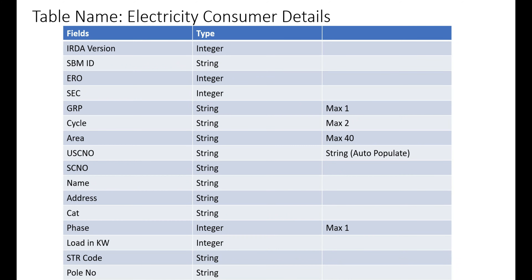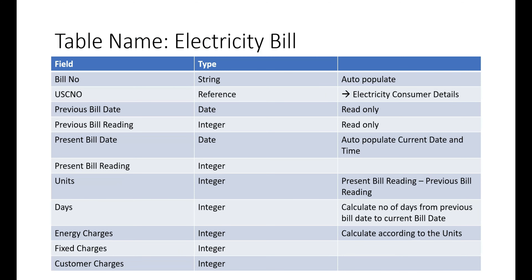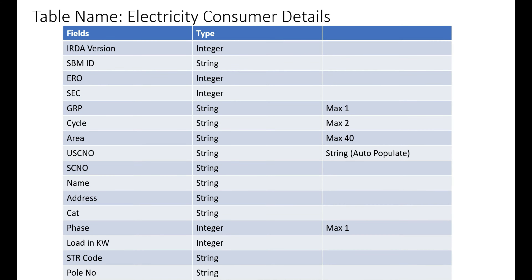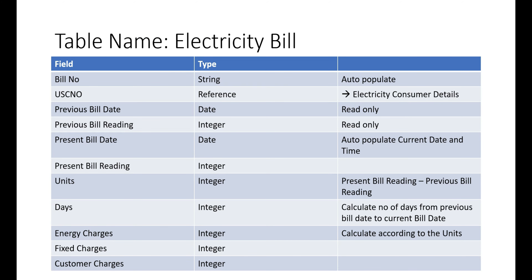GRP is a string with maximum one value. Cycle is a string with maximum two characters. Area is a string with maximum 40 characters, storing the area according to the electricity department. USC number — the service code number — is a string that will auto-populate. When a new consumer registers in the North or Southern Power Distribution organization, a unique number is automatically generated — so no manual entry is needed.